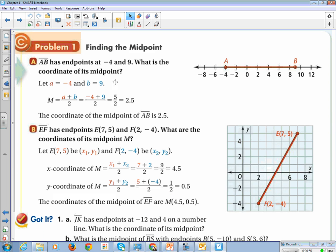So let's look at what that means. AB has endpoints at negative 4 and 9. So A is negative 4 and B is 9. So we're going to go negative 4 plus 9 divided by 2. So that's 5 divided by 2. The midpoint is at 2.5 right here.